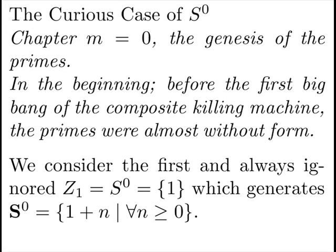The curious case of S0, chapter M equals 0, the genesis of the primes. In the beginning, before the first big bang of the composite killing machine, the primes were almost without form. We consider the first and always ignored Z1, which generates the integers. Not particularly instructive, it would seem, but here it's important.